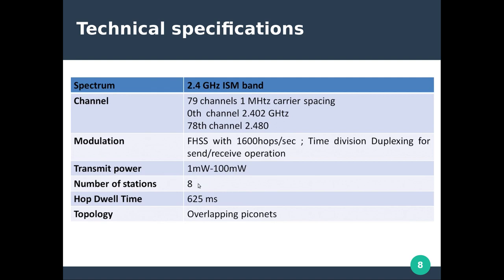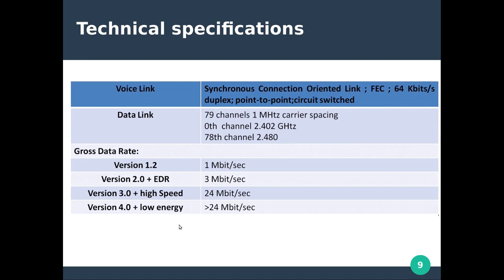Up to eight active stations can be connected in a piconet. The hop dwell time — how long the device stays on a specific frequency channel before hopping to the next — is fixed at 625 microseconds in Bluetooth. The topology is ad hoc in nature, formed with overlapping piconets and scatternets, with no fixed topology.